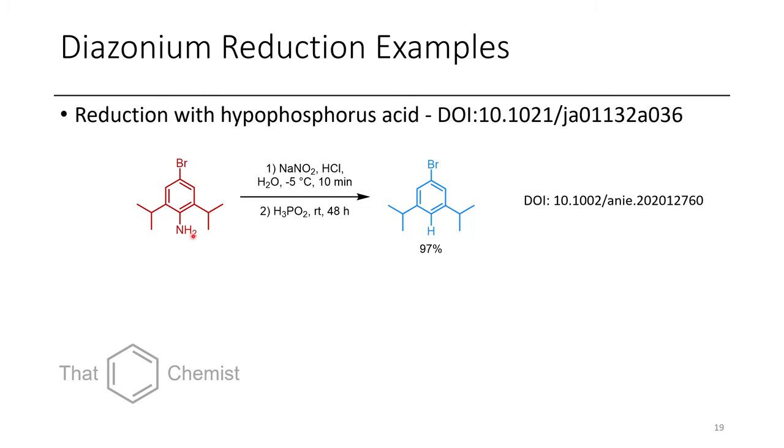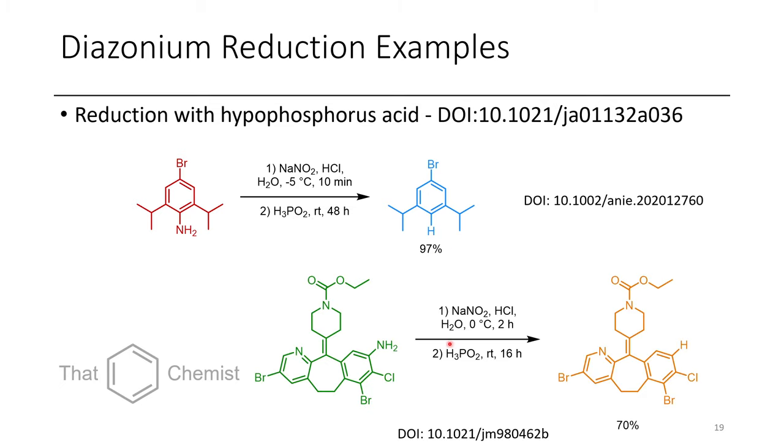Now, if you wanted to just get rid of the nitrogen, delete it out of the molecule, what you can do is treat it with sodium nitrite, HCl, get the diazonium chloride, and then treat it with hypophosphorus acid, which is just a good hydride donor, essentially. And this will just reduce it right away. This also works on more complex substrates, as in the case of this antihistamine derivative shown here.